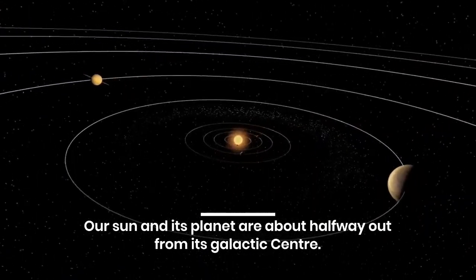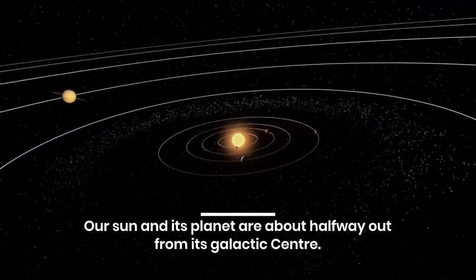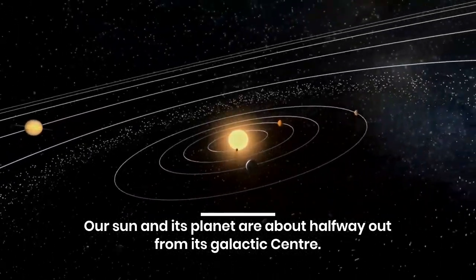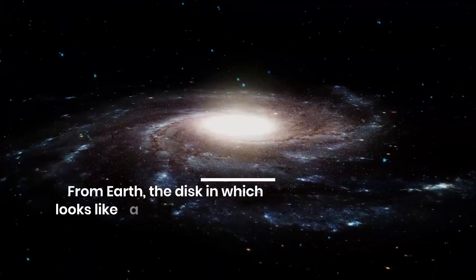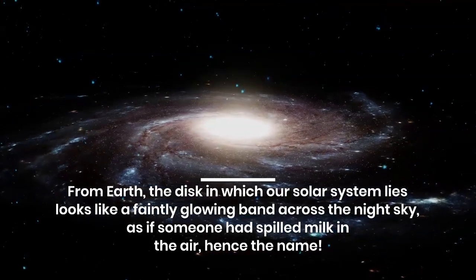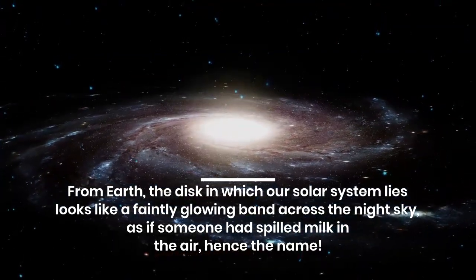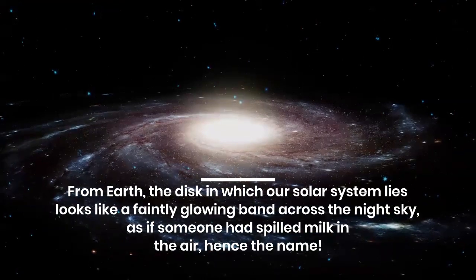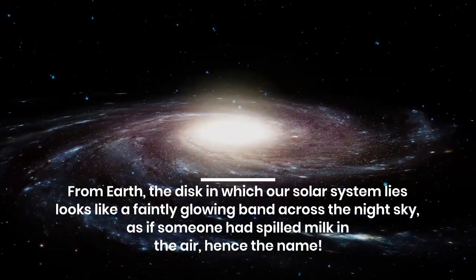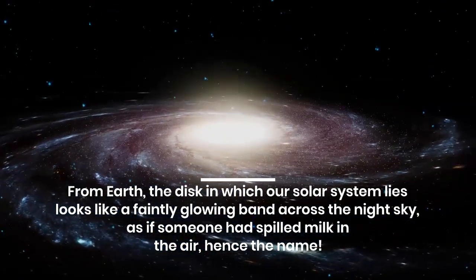Our Sun and its planets are about halfway out from its galactic center. From Earth, the disk in which our solar system lies looks like a faintly glowing band across the night sky as if someone had spilled milk in the air, hence the name.